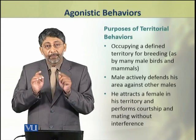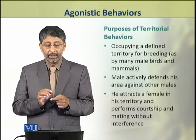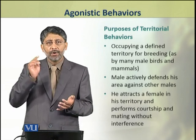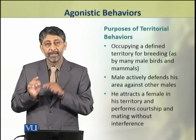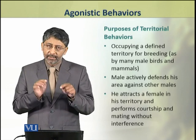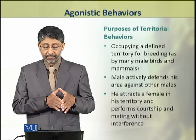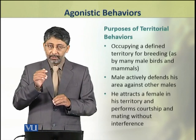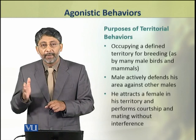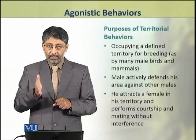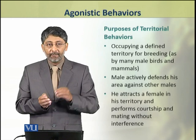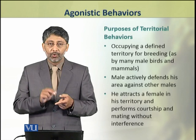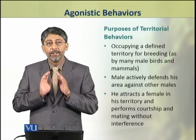Now we shall discuss the purposes of territorial behavior. The first purpose is to occupy a defined territory for breeding, which is the main purpose of male birds and mammals. Males actively defend their occupied area against other males. A male that establishes a territory attracts a female, then performs courtship and mating without interference.